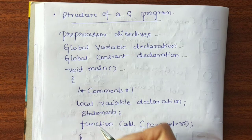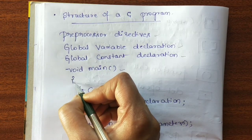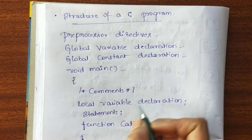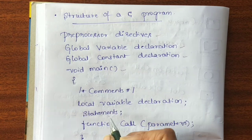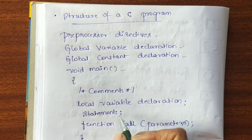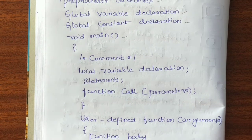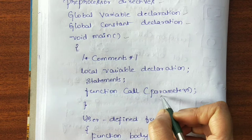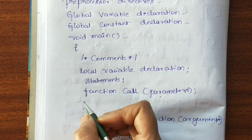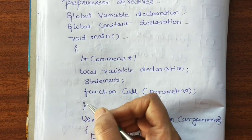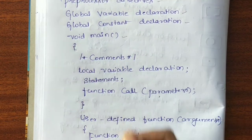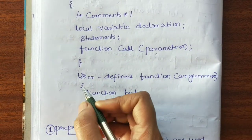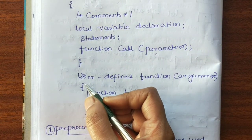Main is a function. After main we open an opening flower bracket. Then if any comments are there we write them. Then we do some local variable declaration. If any statements are there in the program we write them. Then the function call — if any function calls are there, we call them along with the parameters. Then we close the closing flower bracket, closing the main function. Next, if any user-defined functions are there, we define those functions also.